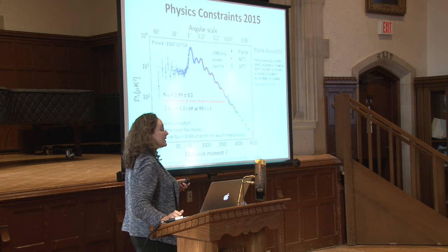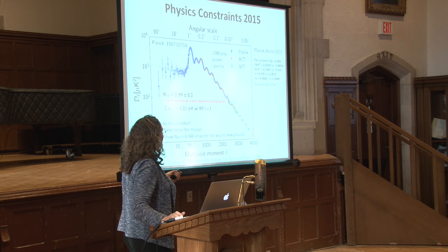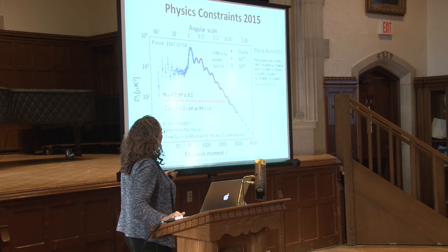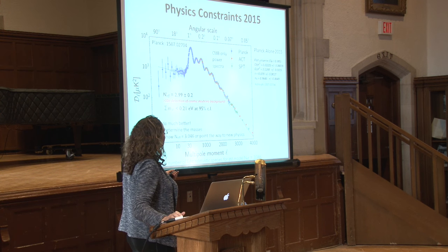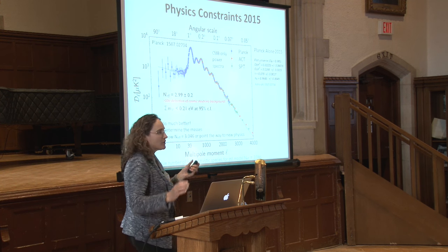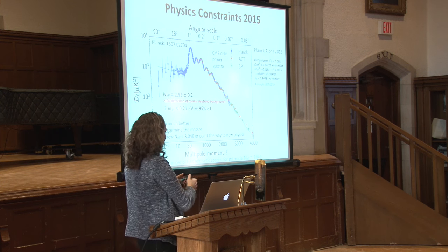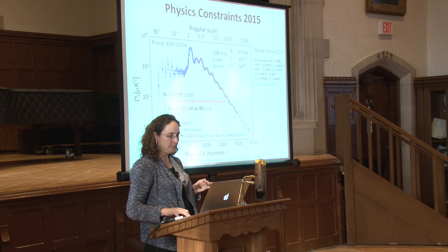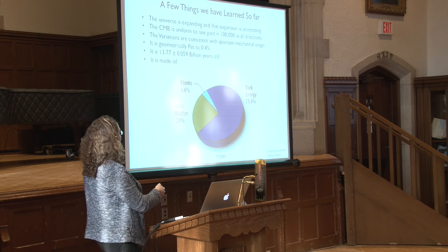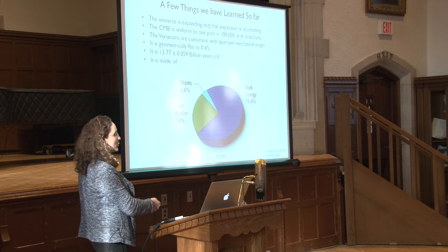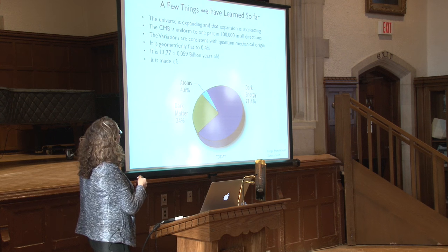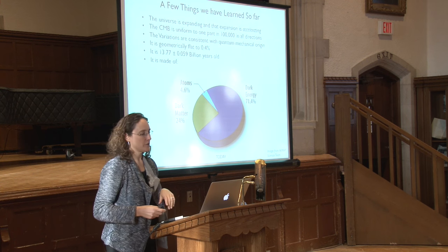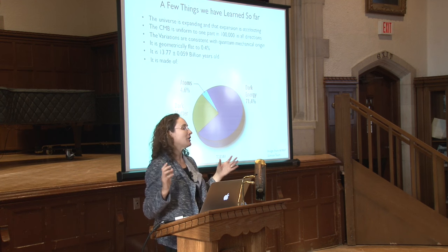From temperature anisotropies alone, from the Planck satellite, we know the universe is flat to well within a percent. We know the baryon content, the cold dark matter content, the optical depth to reionization — how long it took the photons to escape — and the scalar spectral index, which tells you something about initial conditions. In the bigger picture, we have a really good handle on the baryon content, dark matter content, dark energy content, and the age of the universe.